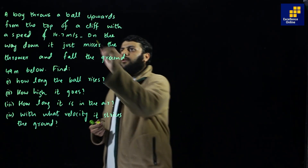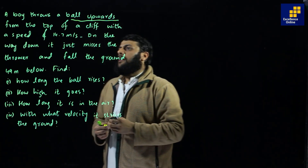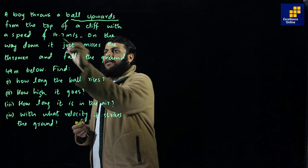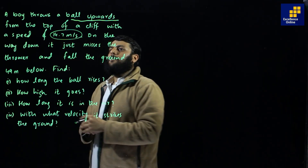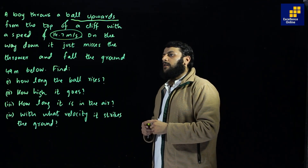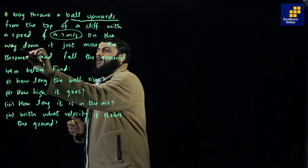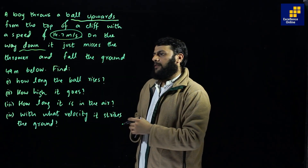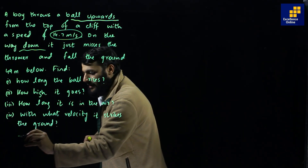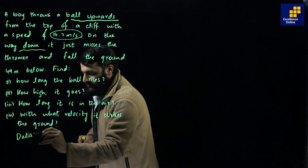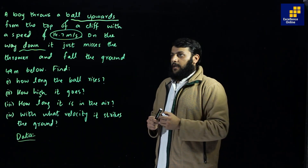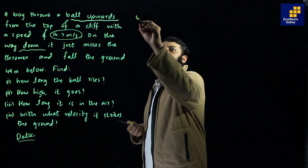The next question says: a boy throws a ball upwards from the top of a cliff with an initial speed of 14.7 meters per second. On its way down, the ball just misses the thrower and falls 49 meters below. We need to find: how long the ball rises, how high it goes, how long it is in the air, and its final velocity.